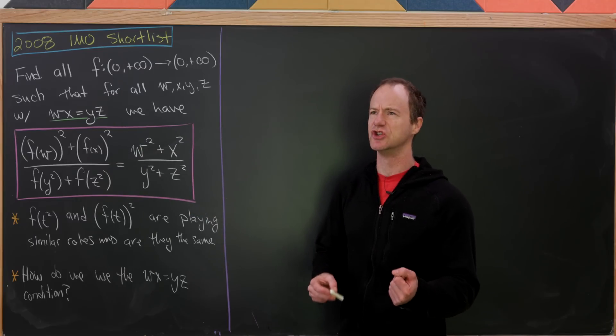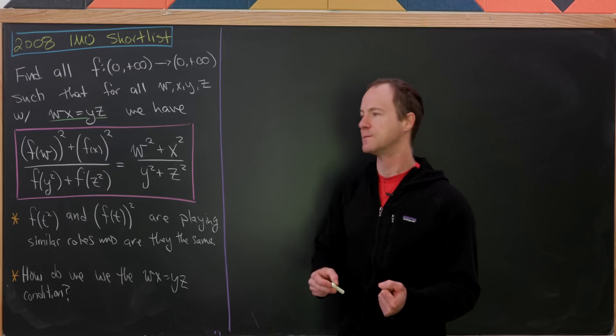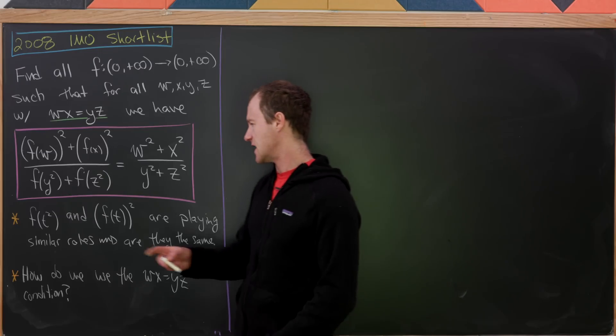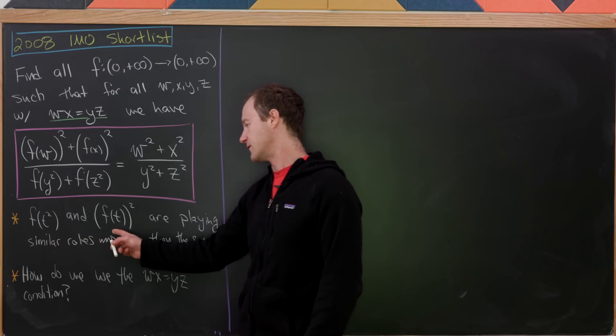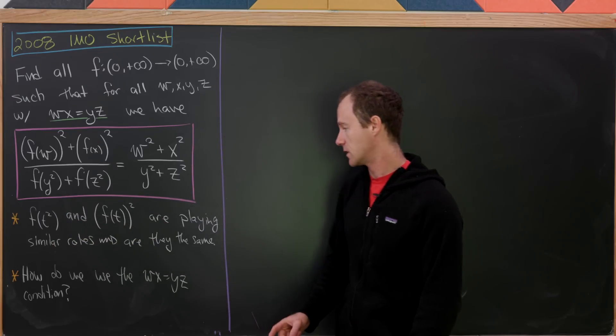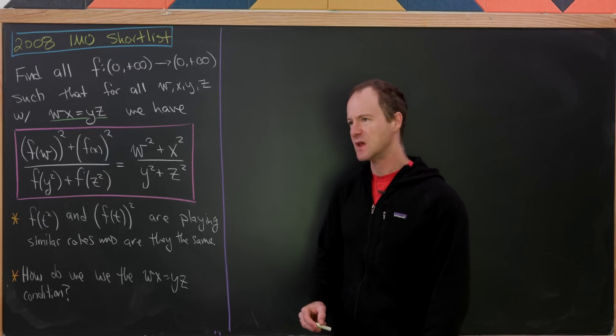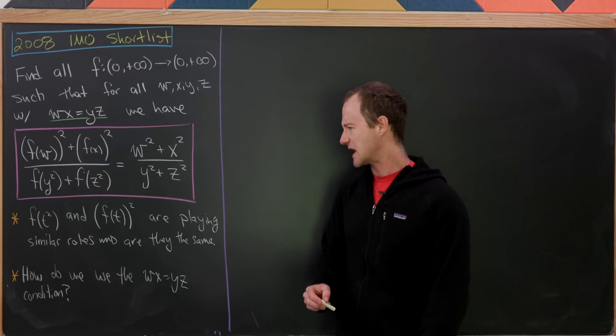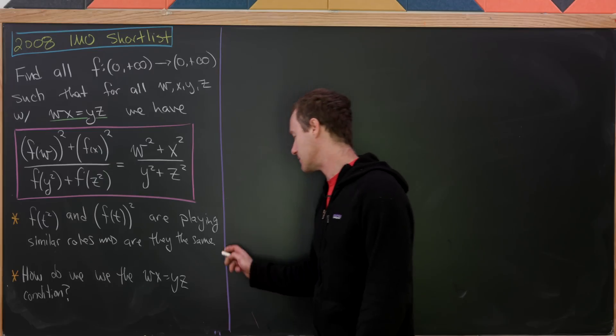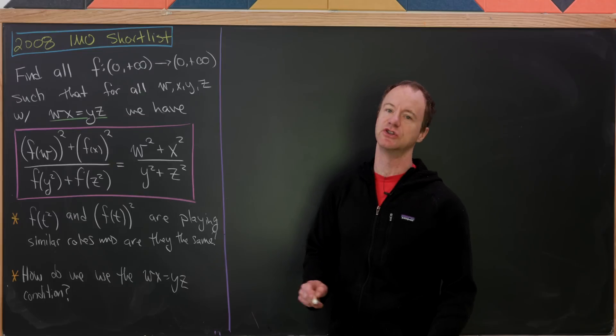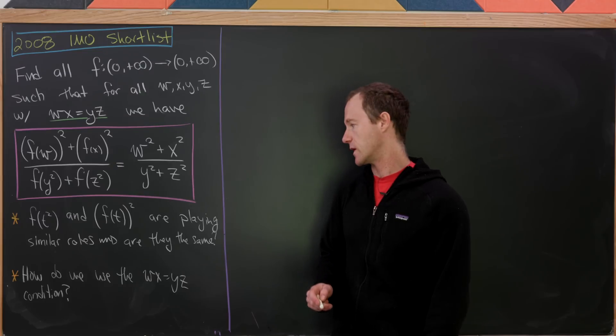So what are some things that jump out at me immediately? Well, I would say that f(t²) and f(t)² are playing similar roles in this functional equation. And that really motivates me to ask the question: are they the same? In other words, is f(t²) equal to f(t)²?